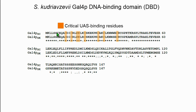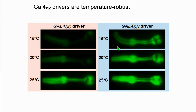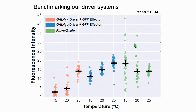Looking at the protein alignment — cerevisiae on top, kujyevzevi on the bottom — they're pretty similar but there are differences, and we hoped those differences would impart better function. Importantly, all residues critical for binding to the UAS are still conserved, highlighted in orange, so we were confident it would still recognize the UAS and drive expression. On the left is the original cerevisiae driver, on the right is kujyevzevi, and in pretty much every case, kujyevzevi performs better.